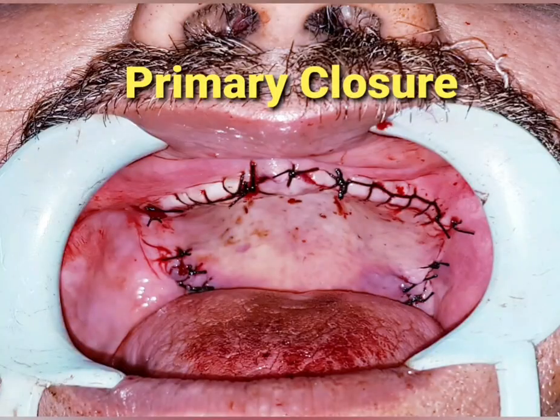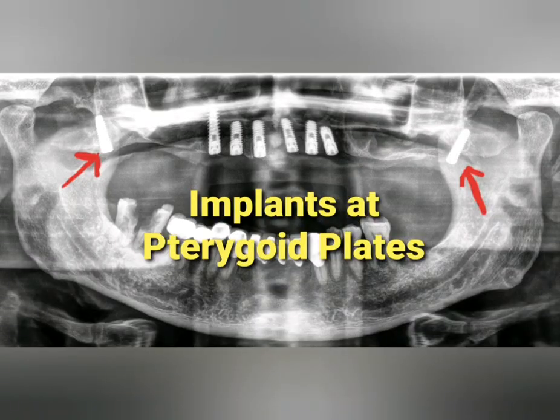It is definitely a challenging case, but if you plan well and execute well during the procedure, the work can be done in an easier way. Planning here is very important. This picture shows all six anterior implants along with the two pterygoid implants. For primary closure, I used 3-0 Vicryl with a reverse cutting needle.